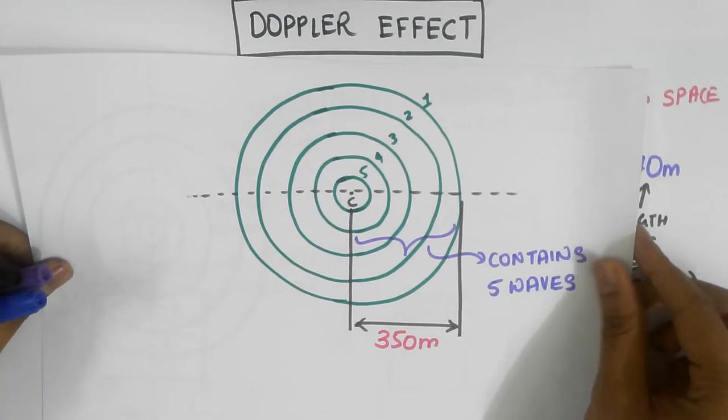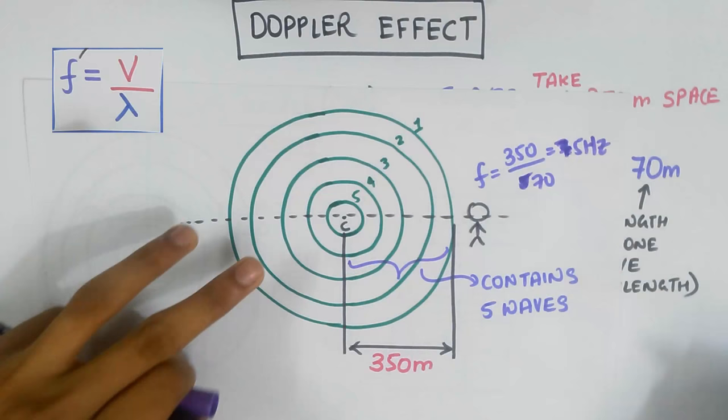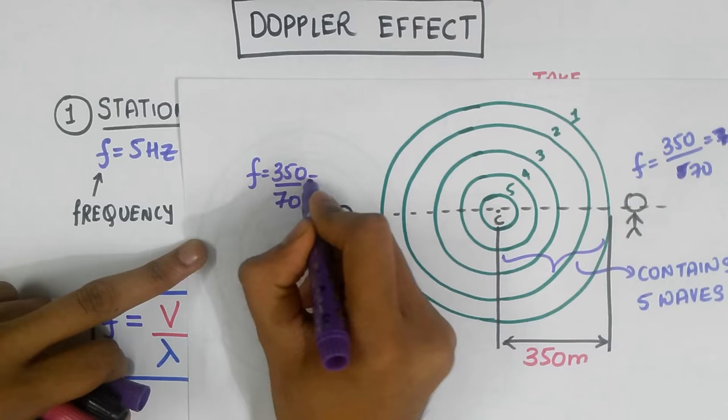So if I listen from here, I will register a frequency of 350 divided by 70 equal to 5 hertz. And from here, 350 divided by 70 also equals 5 hertz.